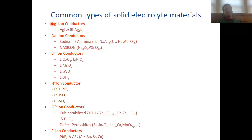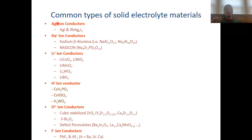We should also consider polarizability. Polarizability is associated with the softness of an ion — the softer an ion is, the more easily it can deform and the more easily you can squeeze it through a lattice. That is the explanation for why there are silver ion conductors: silver has a 1-plus charge, but it's also a pretty soft ion that you can easily deform and squeeze through a lattice.